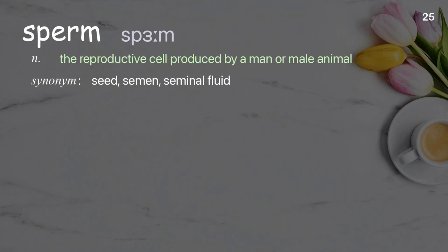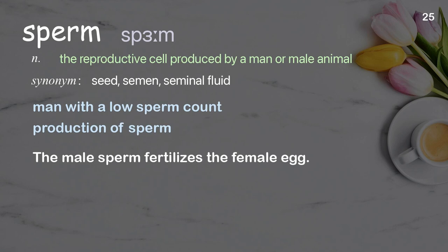Sperm: the reproductive cell produced by a man or male animal. Examples: man with a low sperm count, production of sperm. The male sperm fertilizes the female egg.